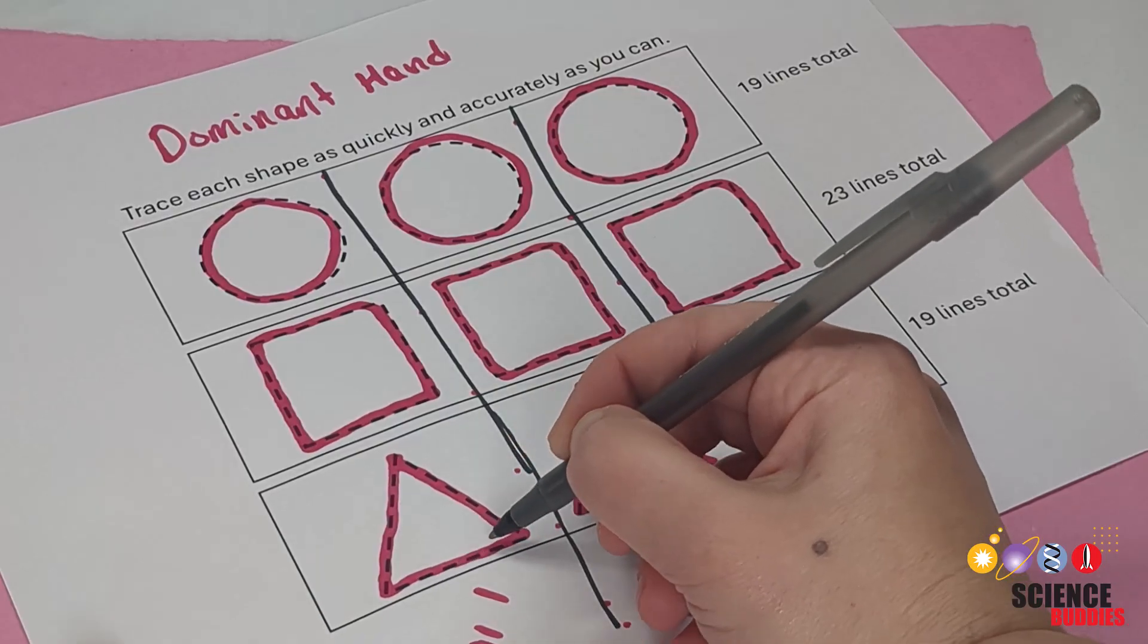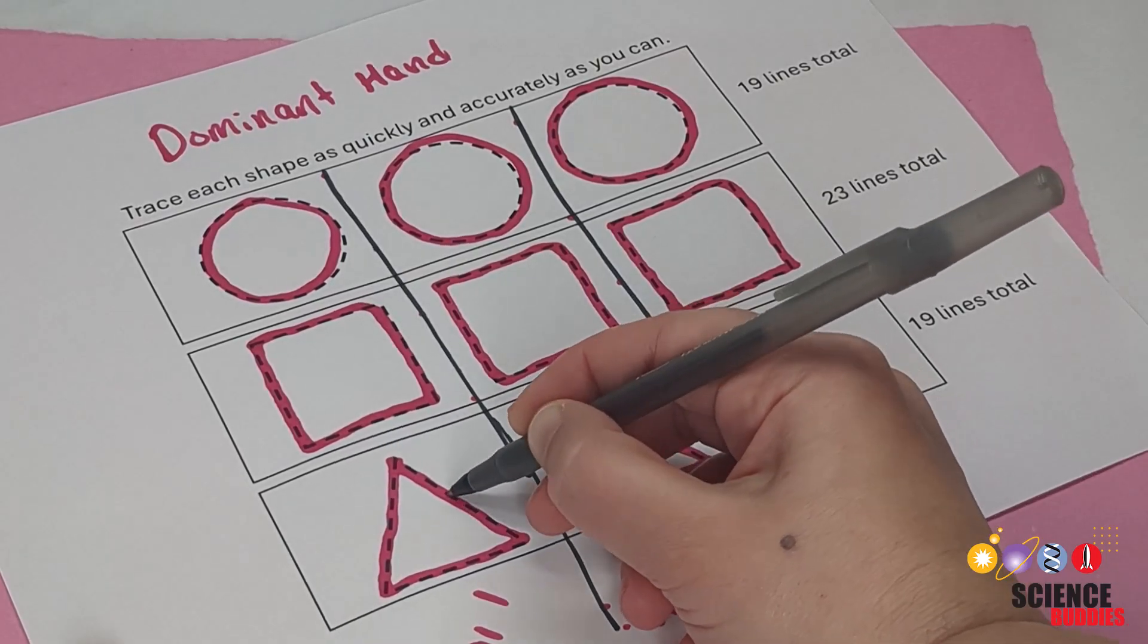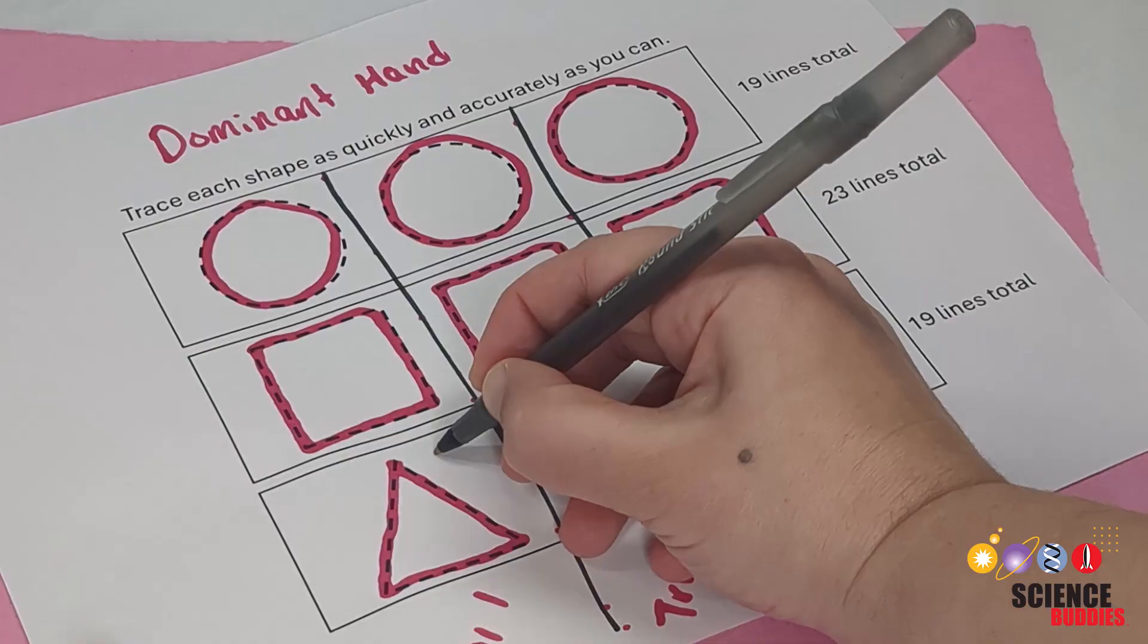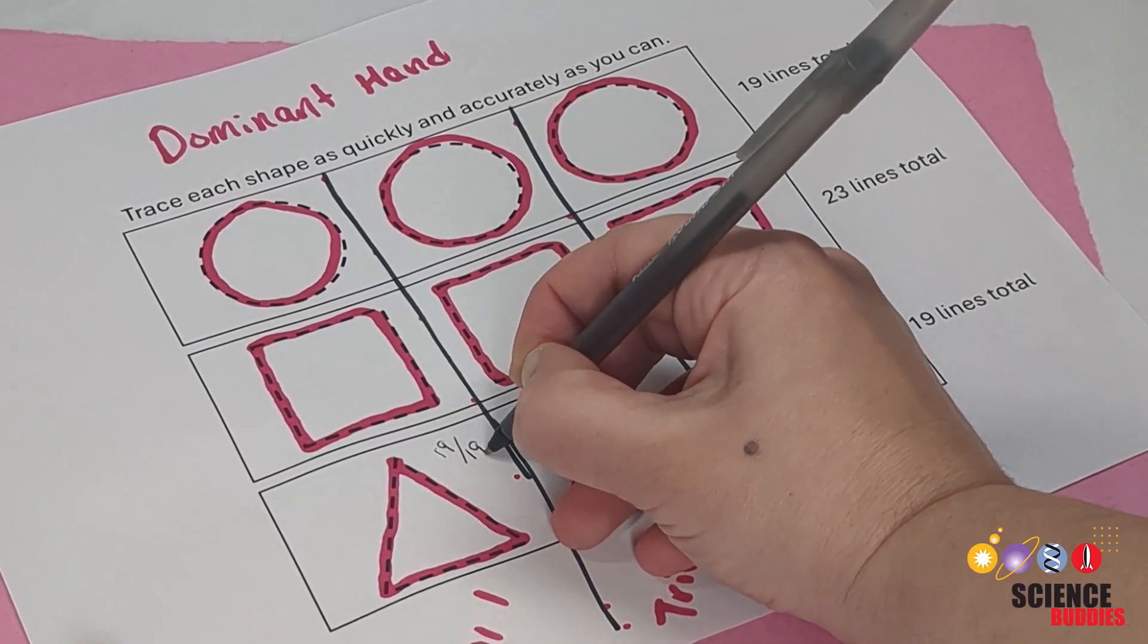After you test your performance, you can calculate the accuracy by counting the number of fully traced lines and dividing it by the total number of lines in the shape.